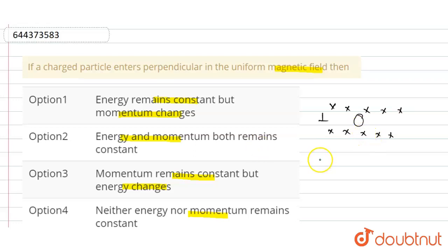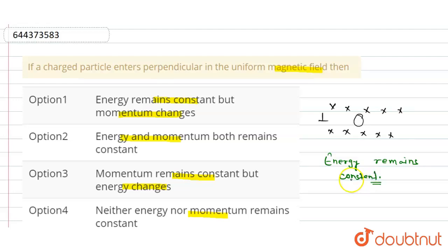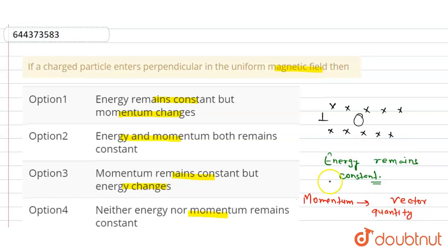The energy of the particle remains constant throughout the path, as the magnetic field does no work on the particle. Now regarding momentum — since momentum is a vector quantity, its direction keeps changing along the circular path. So momentum is not constant throughout the trajectory, but the magnitude of momentum will be constant. Therefore, we can say that momentum changes.